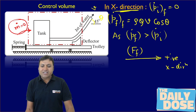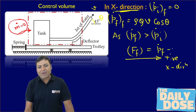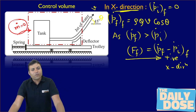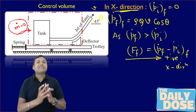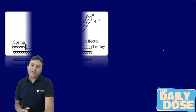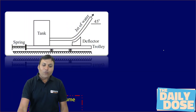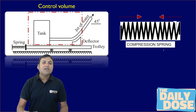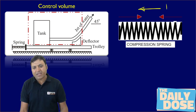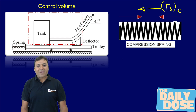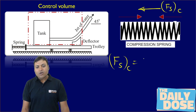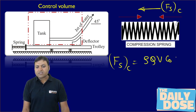There is a force on the fluid in the positive x-direction equal to the rate of change of momentum: final momentum minus initial momentum per second. According to Newton's third law, the same magnitude of force is exerted on the spring in the negative x-direction, causing compression in the spring. The spring force is therefore compressive and equal to rho × Q × V × cos(theta).